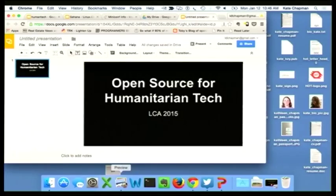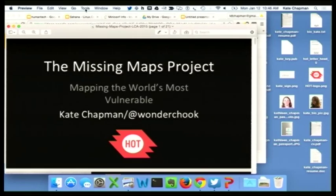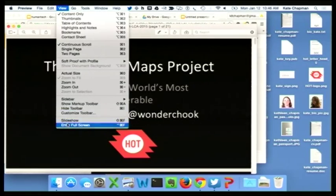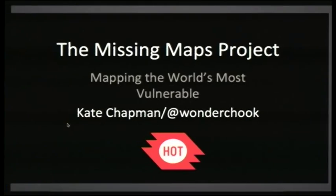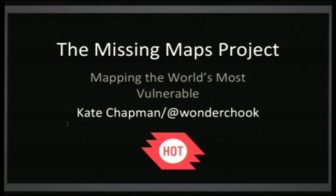First, I'm going to talk about the Missing Maps project. As I said, I'm the Executive Director of the Humanitarian OpenStreetMap Team. We use open source and open data to help communities in vulnerable areas better respond and prepare for crisis. I actually gave a keynote last year at LCA about our overall mission and project. This is a very specific project that we just launched in November of this year.